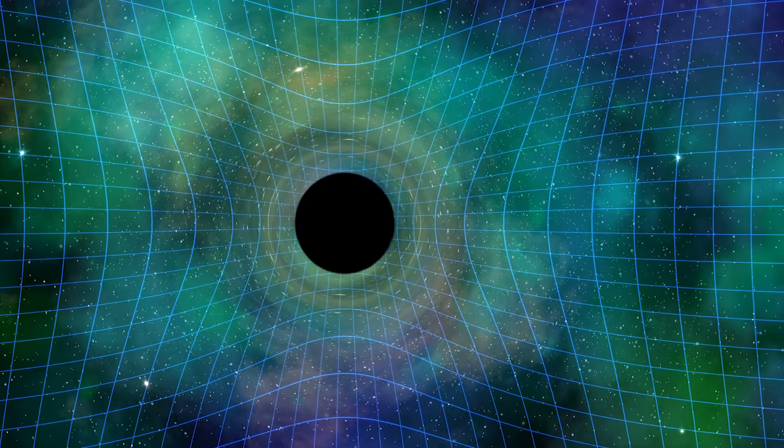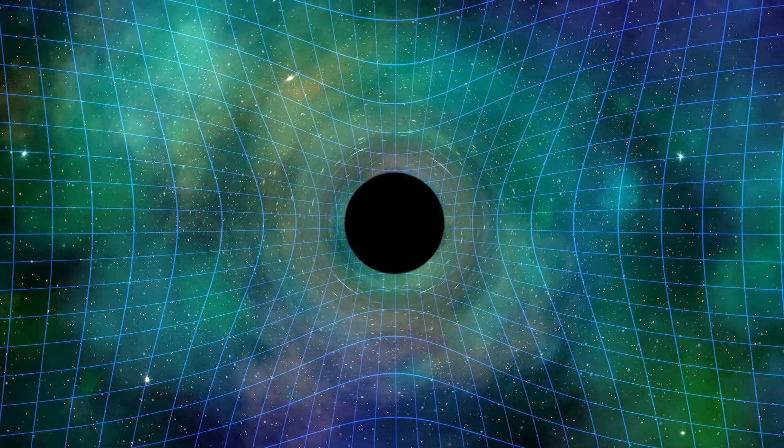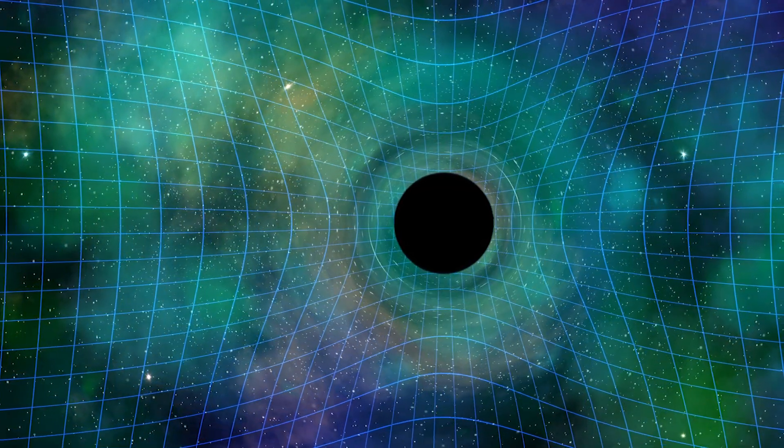Even though the gravitational field there warps space to the point that light can't escape, telescopes can still pick up the radiation coming out of the event horizon.